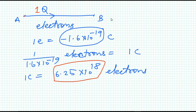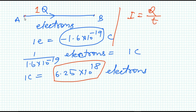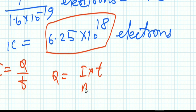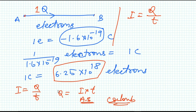Therefore, if one coulomb of charge flows from point A to B, that means this number of electrons is actually flowing from terminal A to terminal B. Current equals the rate of flow of charge — quantity of charge divided by time. Also note that Q equals I into t, meaning ampere-second is equivalent to coulomb. Keep this equation in mind.